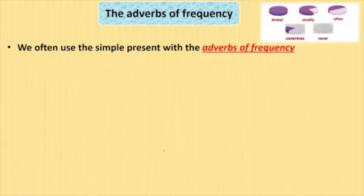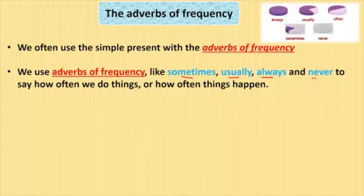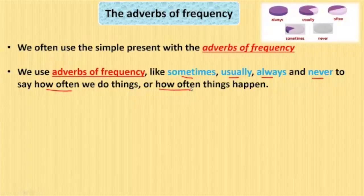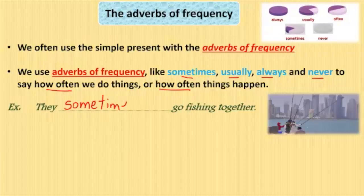The adverbs of frequency — we often use the simple present with adverbs of frequency like sometimes, usually, always, and never to say how often we do things or how often things happen. Example: They sometimes go fishing together. 'Sometimes' is an adverb of frequency and with it we use the simple present.